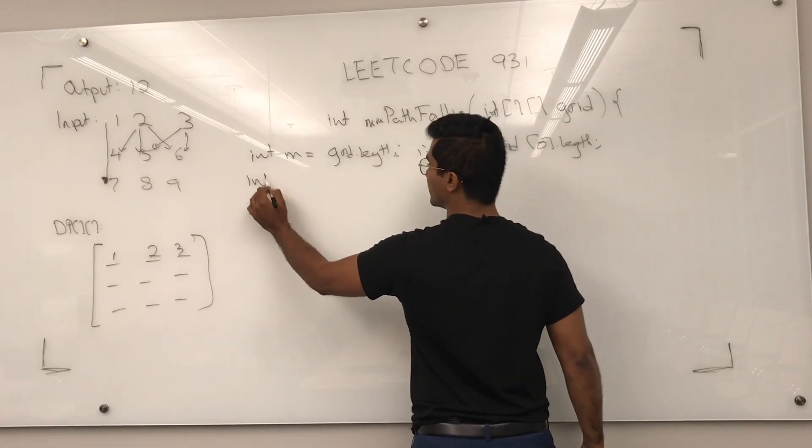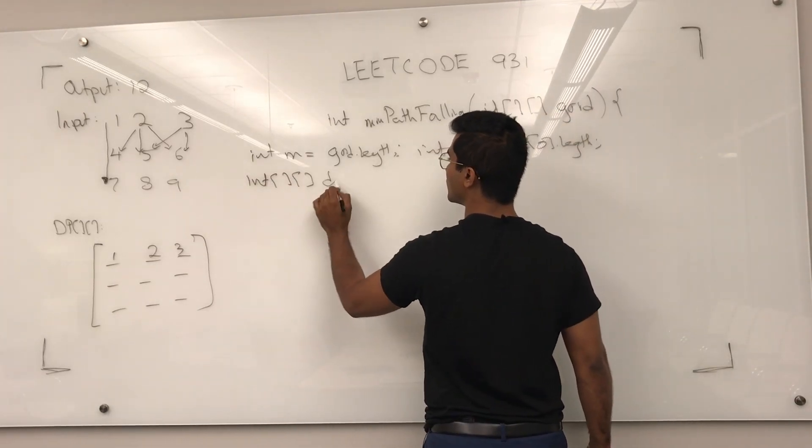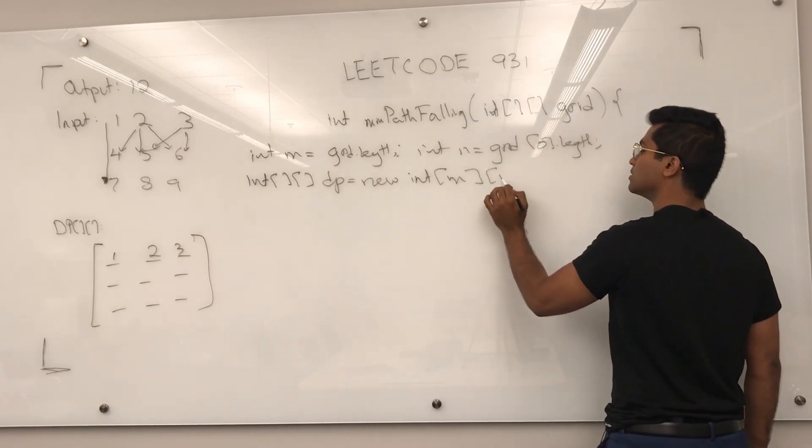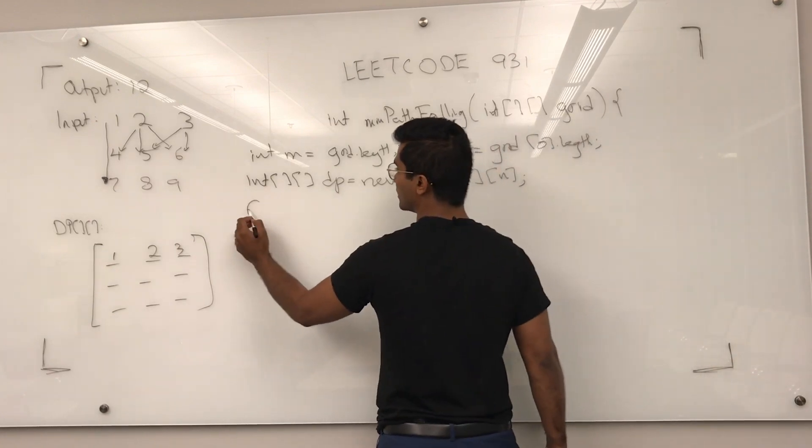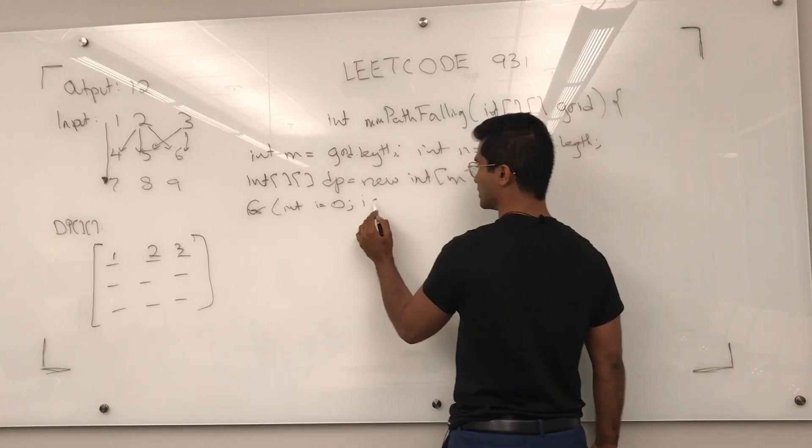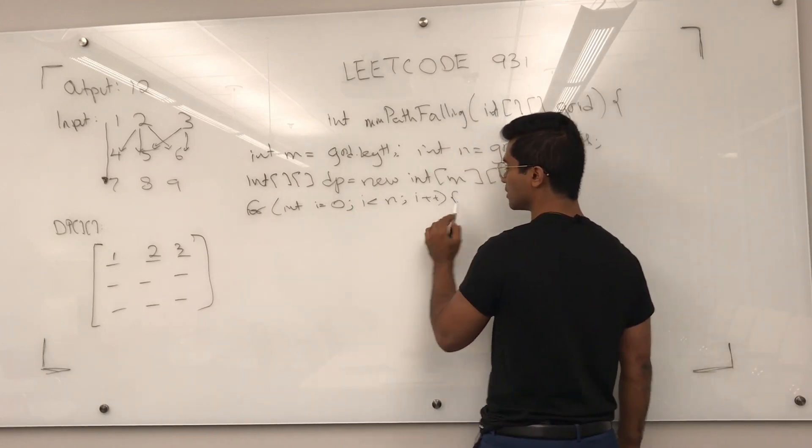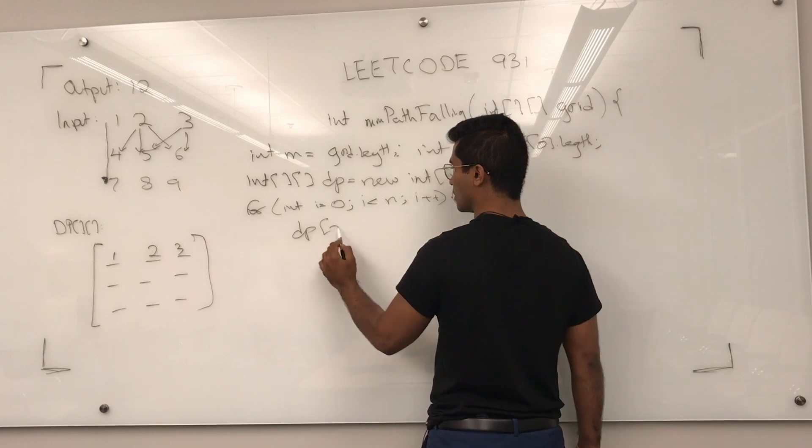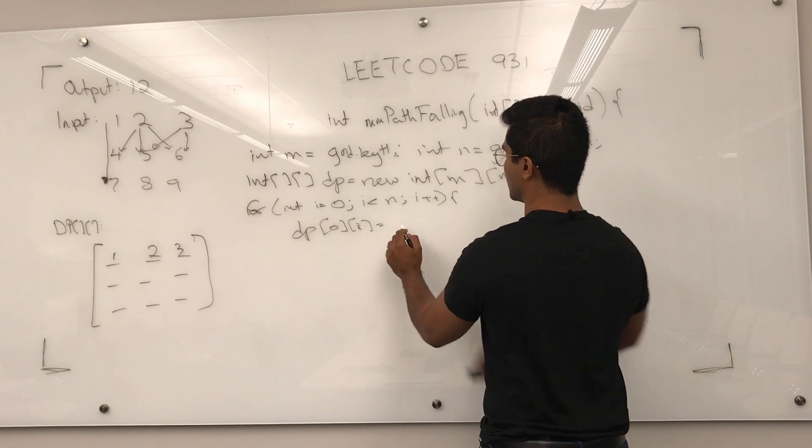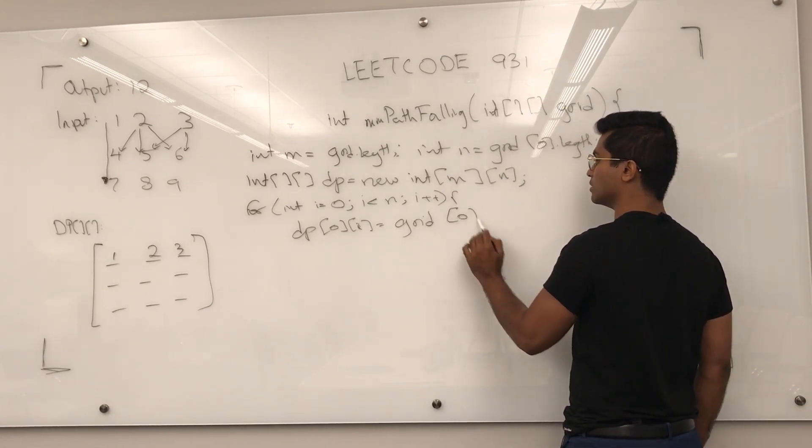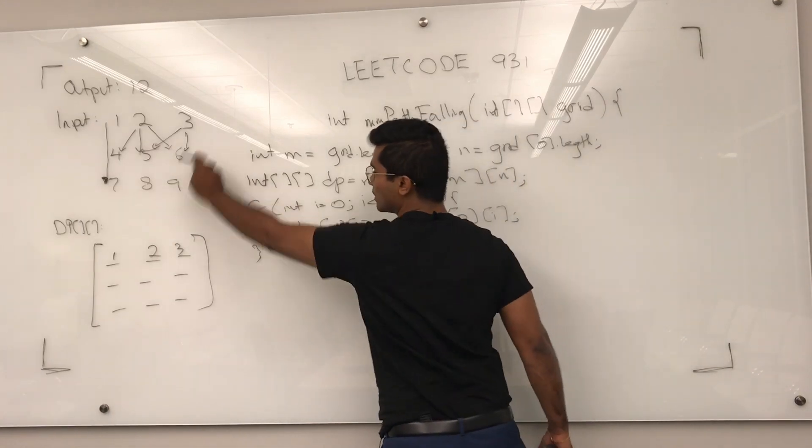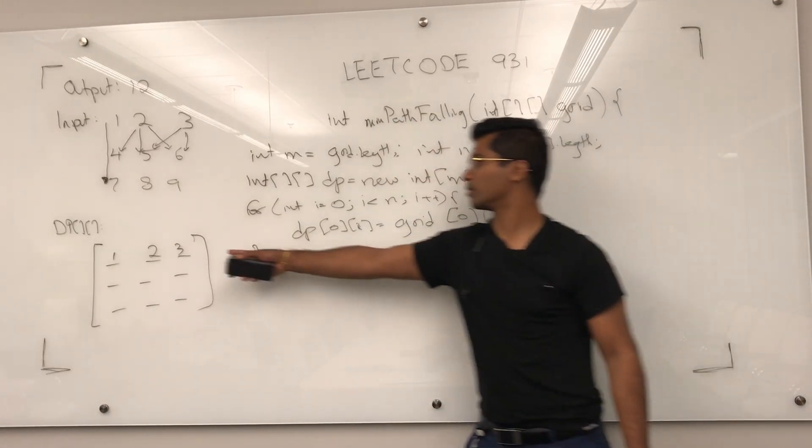And then int[][] dp is new int[m][n]. And I'm going to initialize for int i = 0; i < n; i++, dp[0][i] is going to be set to grid[0][i]. This is just the base case. So, this piece of code is going to fill up this line.